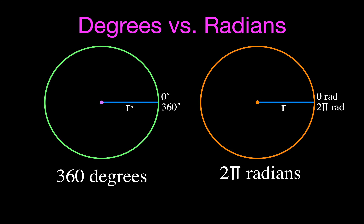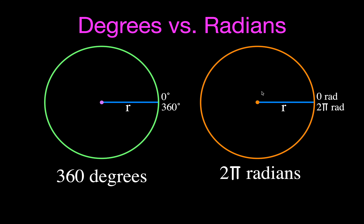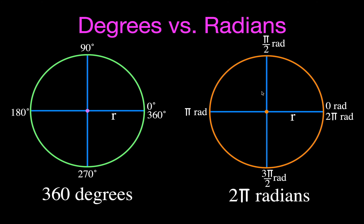All the way around is two pi, so halfway around — 180 degrees — is pi radians. Half of that is 90 degrees, which is pi over two radians, because half of pi is pi over two. For 270 degrees you need three of those, so 270 degrees is three pi over two radians. Then going all the way around gives you two pi radians.